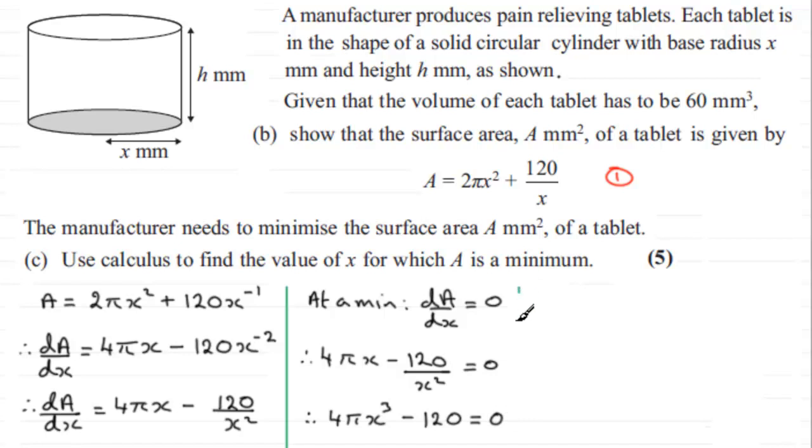Now if we add 120 to both sides, we therefore have 4πx³ equals 120. And then I could divide both sides by 4π to give me x³. x³ equals 120 then over 4π.